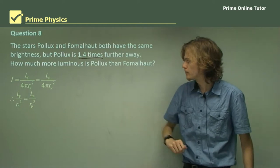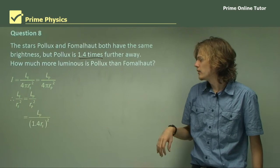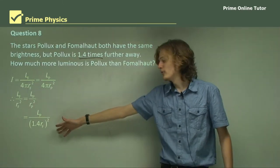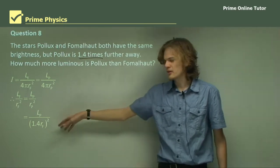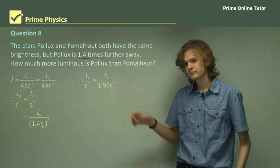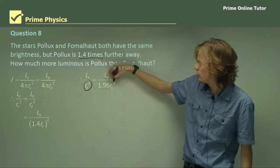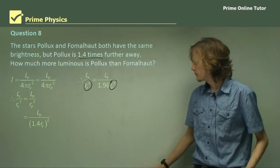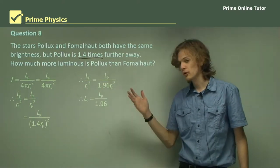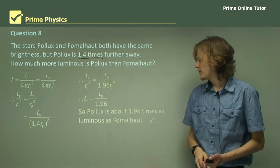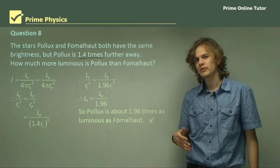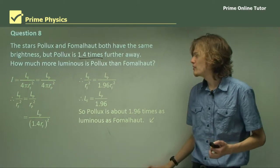We can get rid of the 4π's. After substitution, we have Lₓ over rₓ² equals Lₚ over 1.4 rₓ squared. When we square the bracket, we square everything inside, giving us 1.96, which is 1.4 squared, times rₓ². Now we have the same denominator on both sides. We can cancel that out, giving us the luminosity of Fomalhaut equals the luminosity of Pollux over 1.96. So Pollux is about 1.96, or twice as luminous as Fomalhaut. This lets us determine relative luminosities simply by knowing brightnesses and distances.